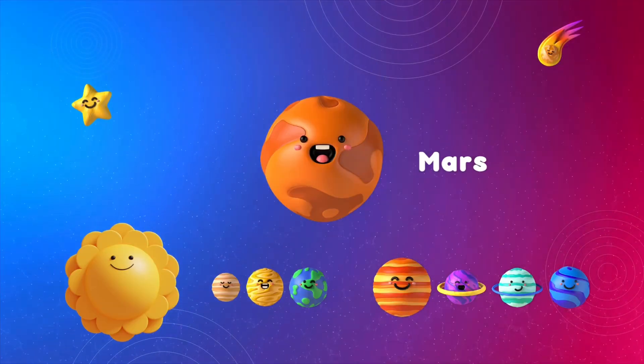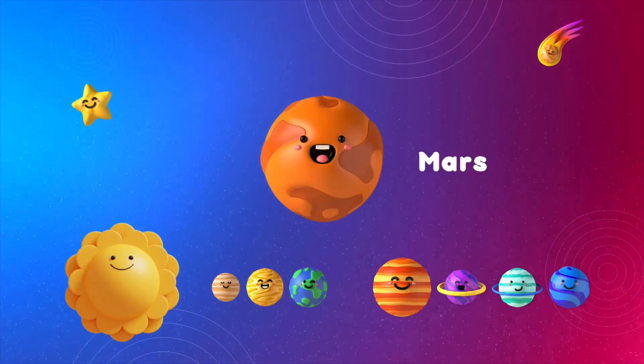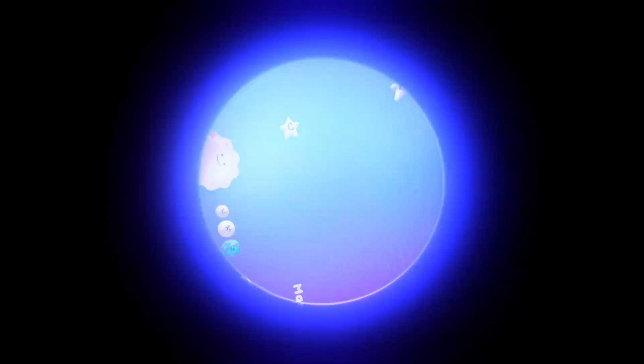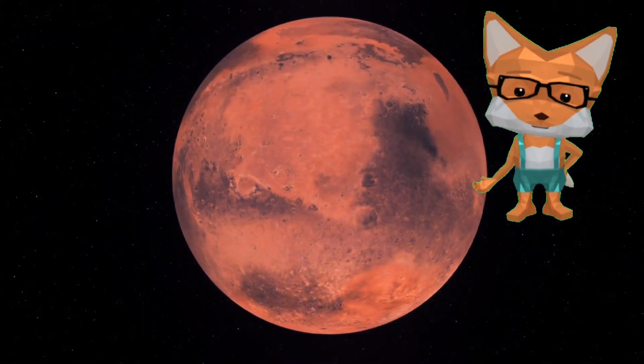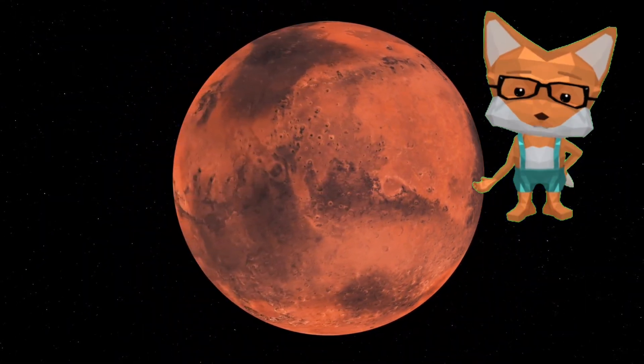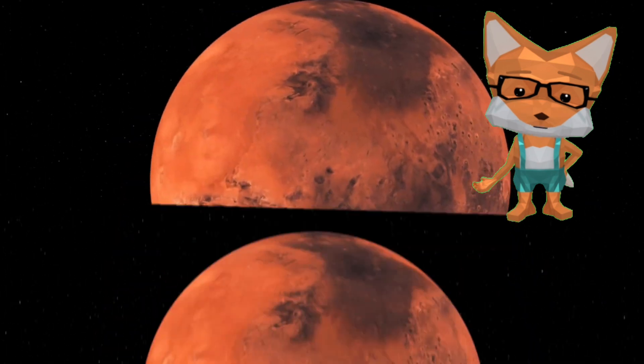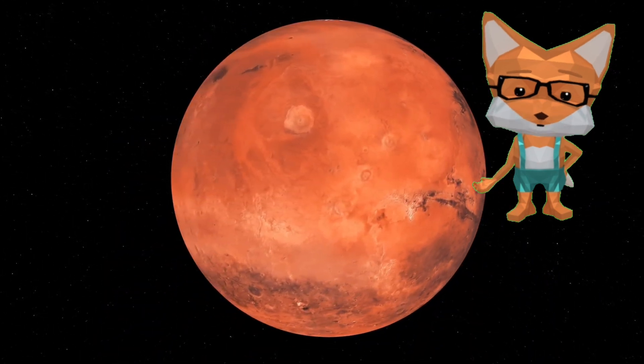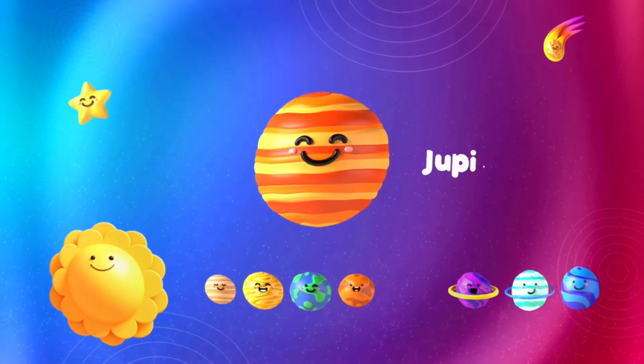This is Mars. Mars is like a big playground covered in red sand. It even has huge volcanoes. Scientists wonder if there were even alien friends playing hide and seek there.